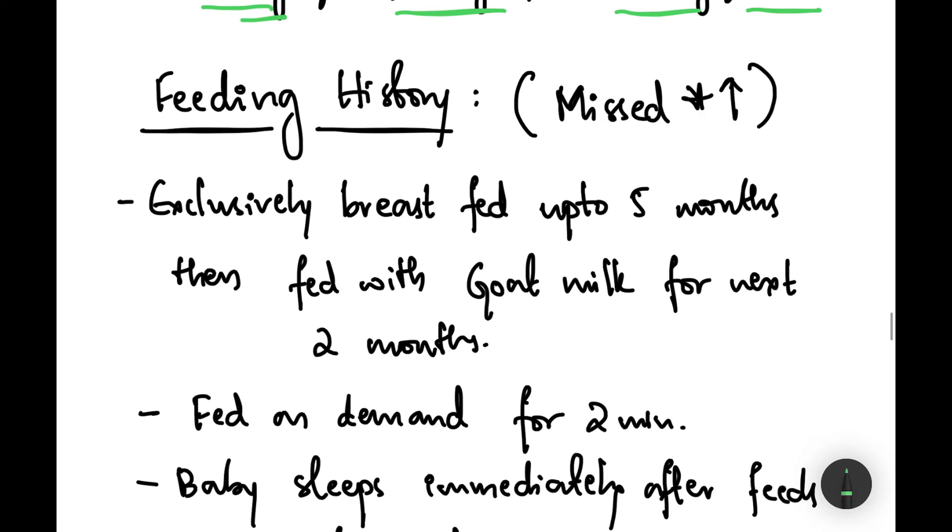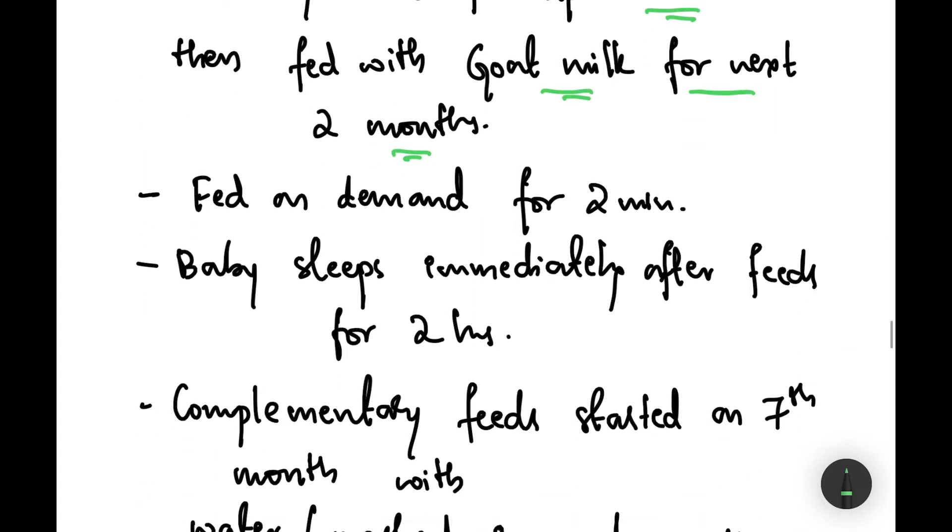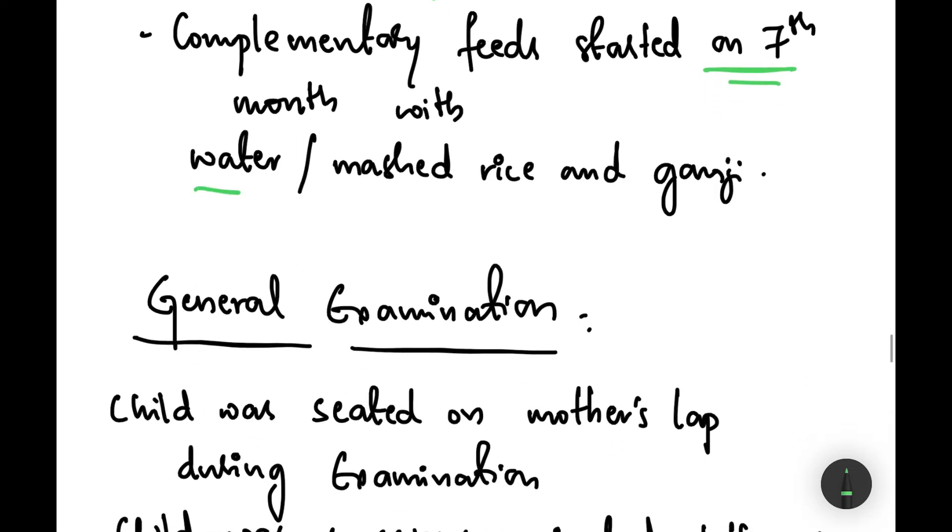Moving to the feeding history which was missed above, the baby was exclusively breastfed up to five months and then fed with goat milk for the next two months. It was fed on demand for 20 minutes and baby sleeps immediately after feeds for two hours. Complementary feeds were started on the seventh month with water, mashed rice, and ganji.